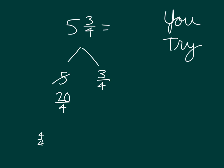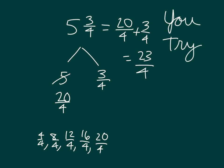It was 4 fourths, 8 fourths, 12 fourths, which is also equal to 3, 16 fourths, and finally 20 fourths. What do we do with the 20 fourths and the 3 fourths? Right, you add them. So you get 23 fourths. 23 fourths does equal 5 and 3 fourths.